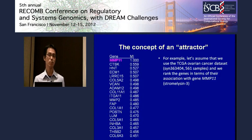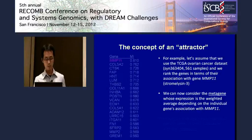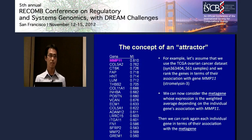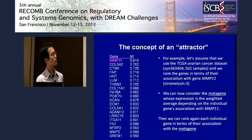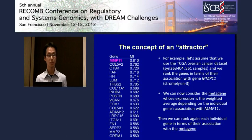After you create a metagene using the weighted average, you can re-rank all genes in terms of their mutual information with this metagene. You will find that MMP11 still has the highest mutual information, but it's no longer 1, and other genes start to gain higher mutual information. Given this updated gene rank list, you recreate another updated metagene and re-rank all genes again. This iterative process just goes on again and again.